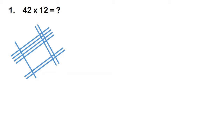The dot means the intersection point formed by the connection of lines. We want to count the dots from left to right. Starting from the leftmost group, count the dots: 1, 2, 3, 4 — so totally 4 dots.